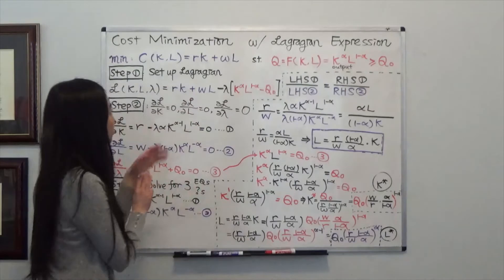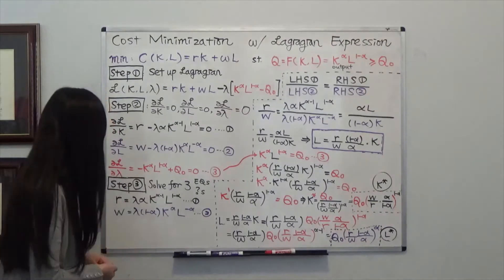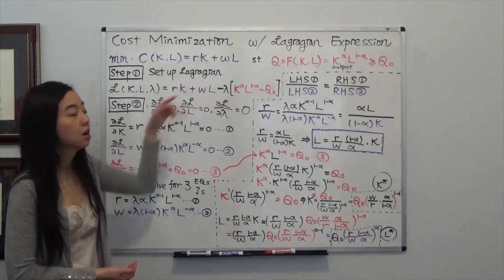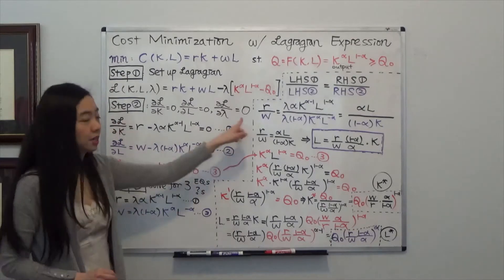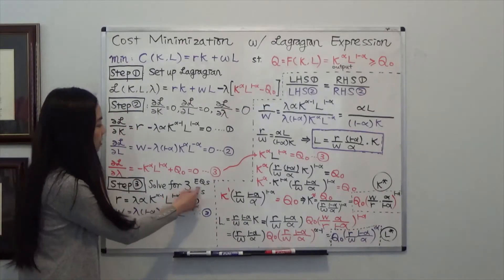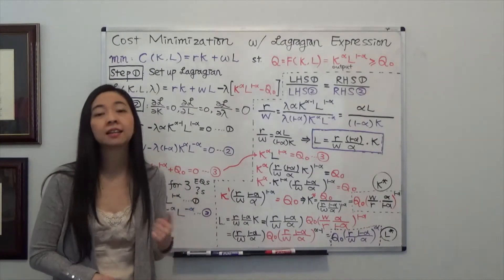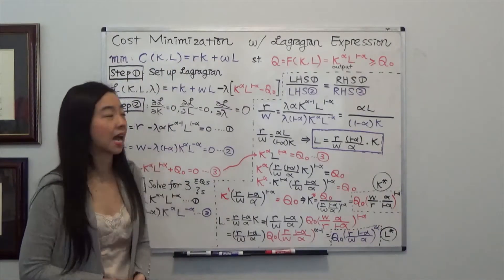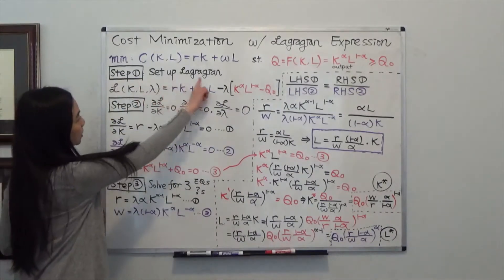We use three steps to solve. First, we set up our Lagrangian. Second, we take the partial derivative of the Lagrangian expression with respect to capital, labor, and lambda, and set them equal to zero. You'll then have three equations and three unknowns — solve for those three unknowns. You'll be able to find the optimal amount of capital and labor to hire in order to minimize cost and satisfy your quantity constraint.